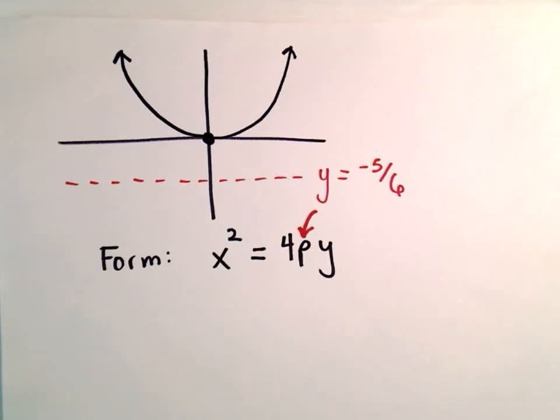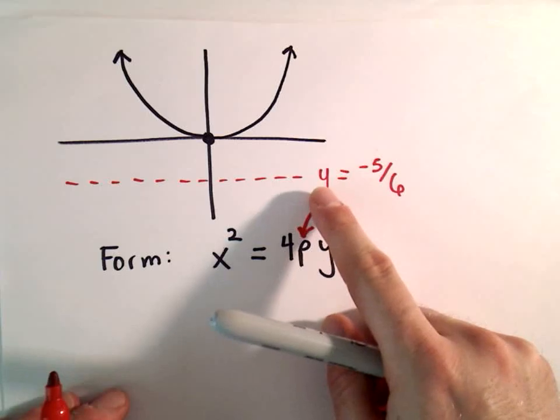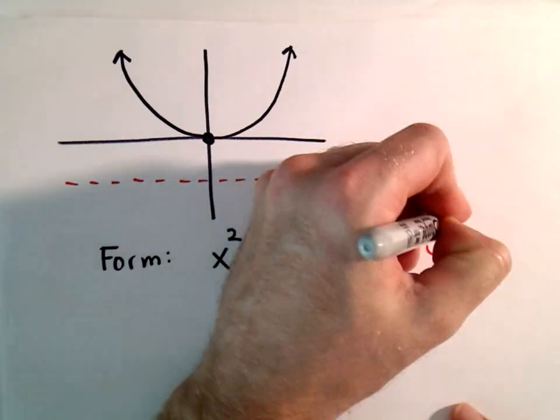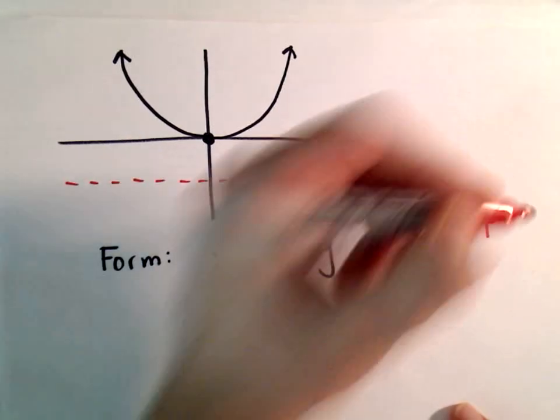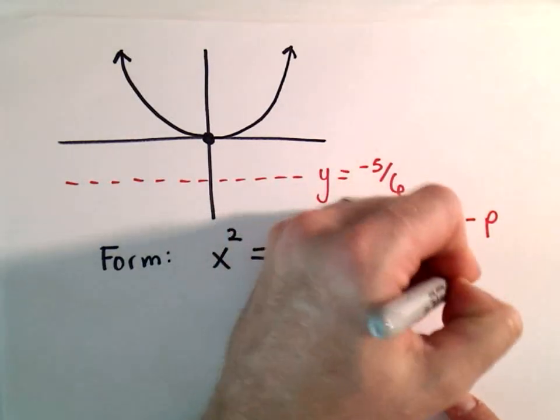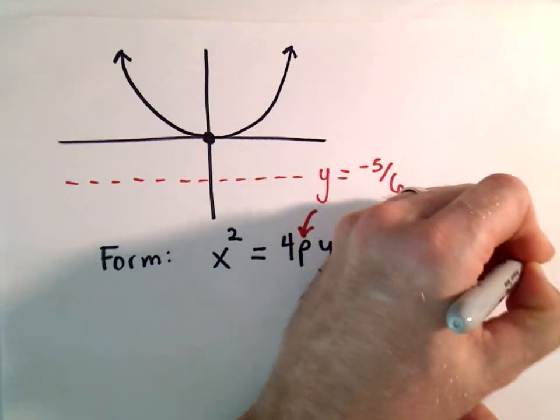So we've seen that if the directrix, in this case, we can write it as y equals negative p. And we know that our focus is at the point 0 comma p.